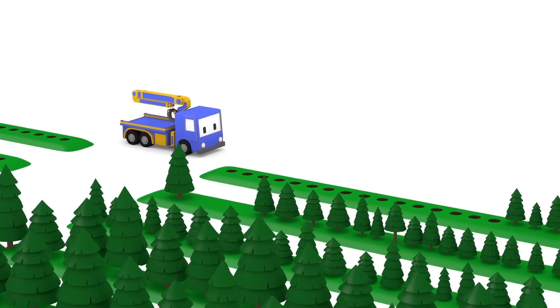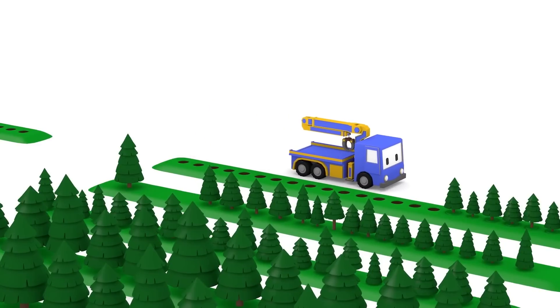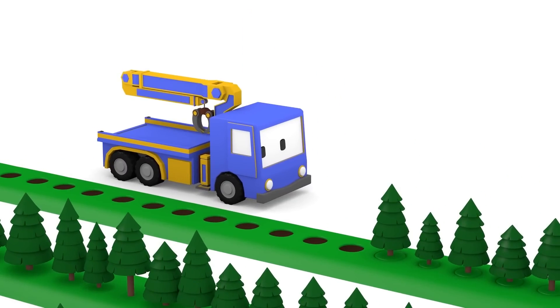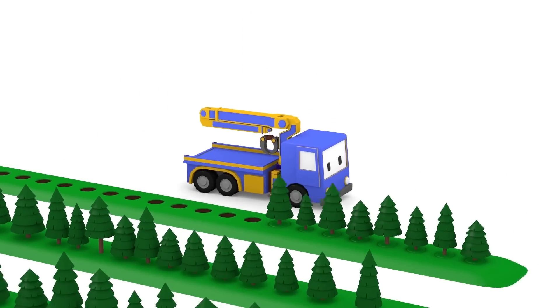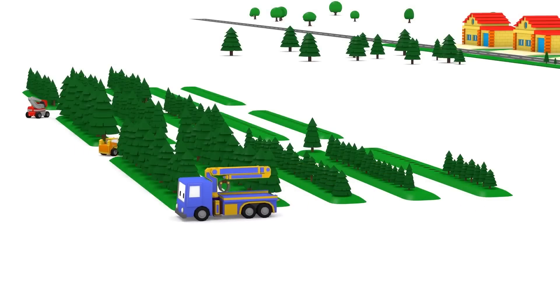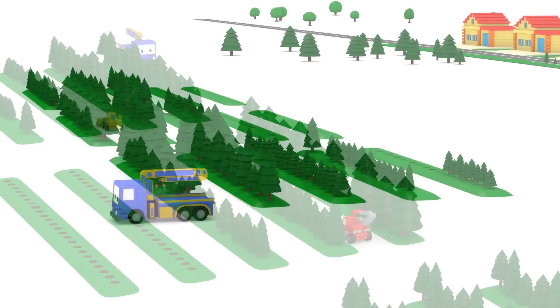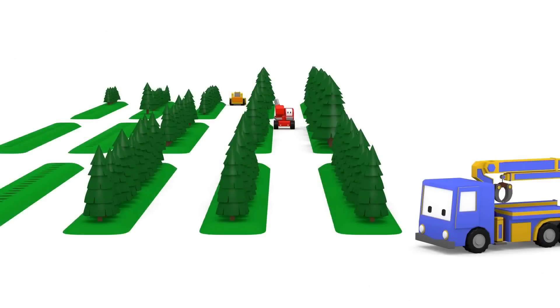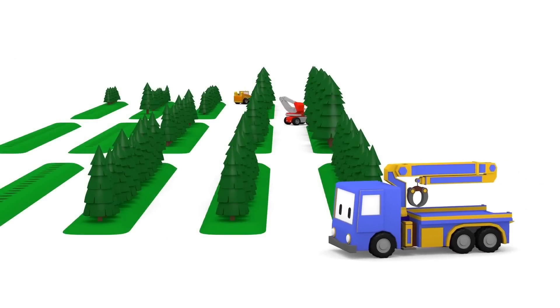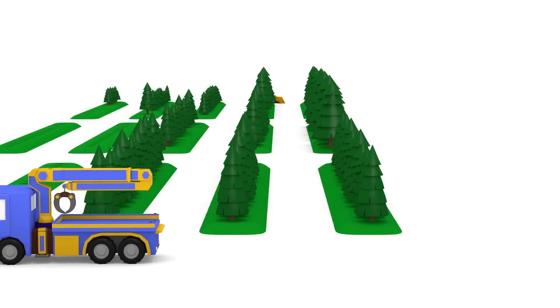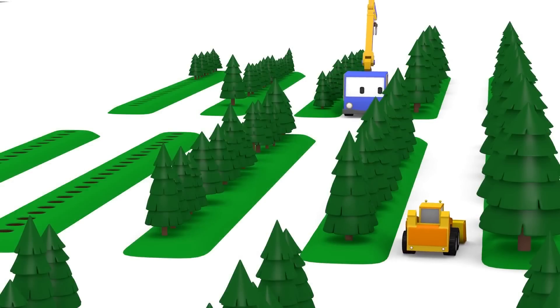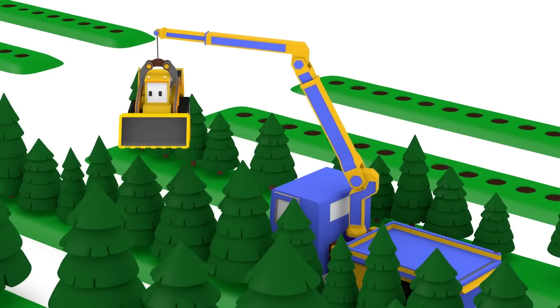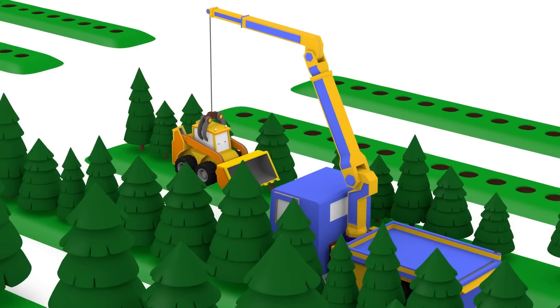But which one should we get? Charlie, maybe you should ask Ed for help. But where is Ed? Oh, he must be here somewhere. Maybe he's hiding. I don't see him or Billy. Let's keep looking. Great catch, Charlie. Now, to find Ed and then get more trees.